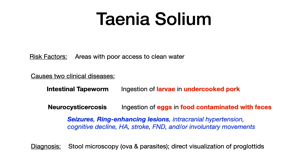Neurocysticercosis is the disease you should be most familiar with. It causes central nervous system symptoms: seizures and ring-enhancing lesions are the big ones. It can also cause intracranial hypertension, neurocognitive deficits, headache, stroke, focal neurological deficits, or involuntary movements. If you see this presentation with nonspecific neurological symptoms, they're going to show you an image on the next slide.